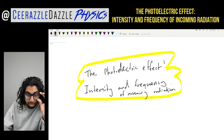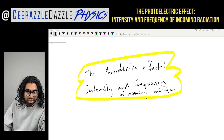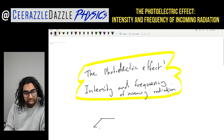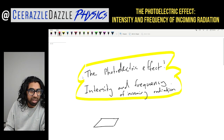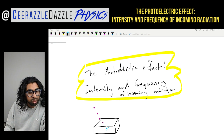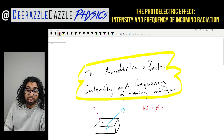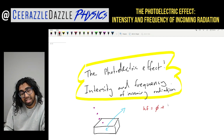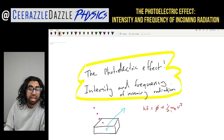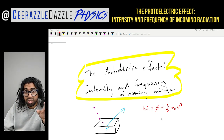Hopefully you've watched my previous videos on this topic before watching this one, otherwise it won't make sense. We should be aware that if we have a metal surface and fire photons at it, the photons enter the metal surface and electrons inside the metal gain energy from the photon and are liberated. This gives us the formula: hf = φ + ½m_e v², where m_e is the mass of the electron, v is the velocity, f is the frequency of the incoming radiation, and φ is the work function.